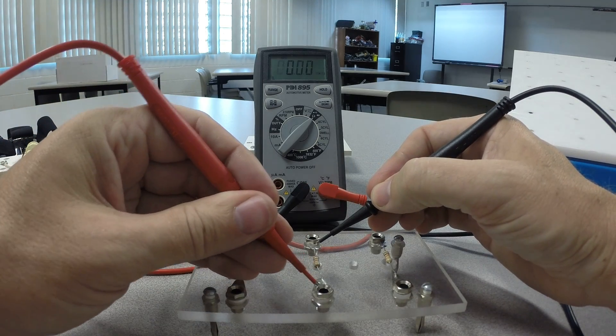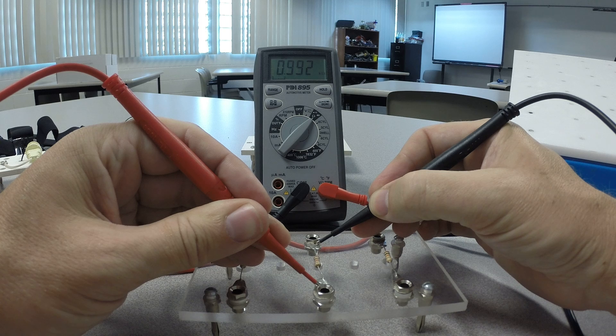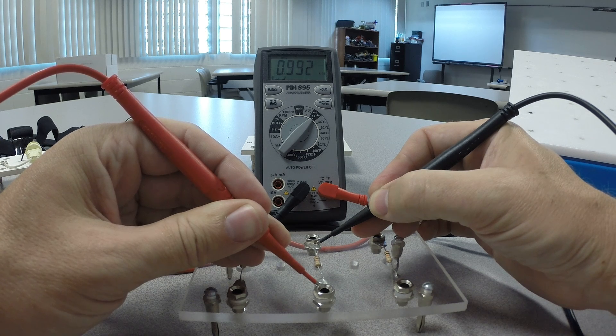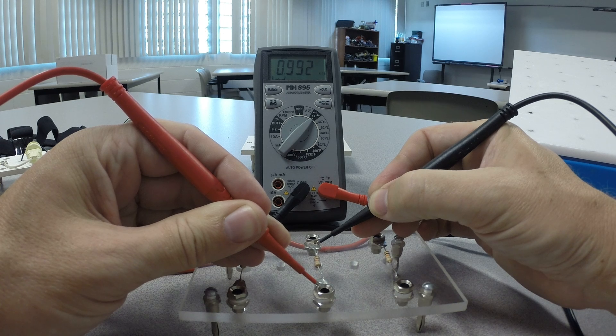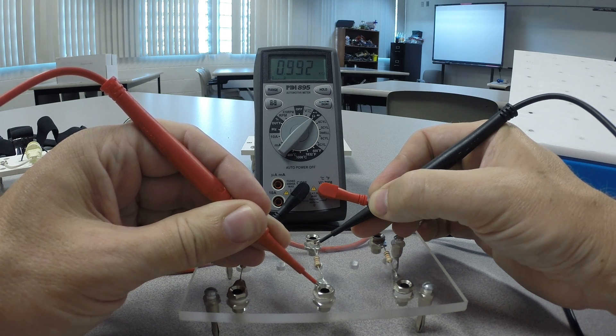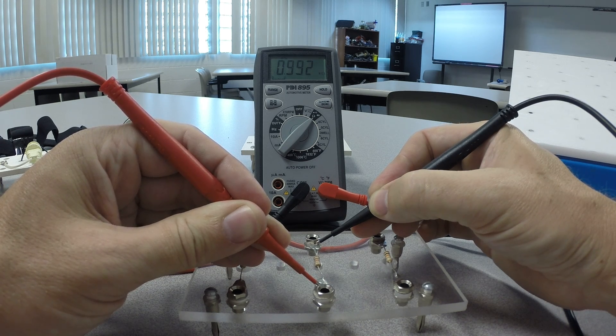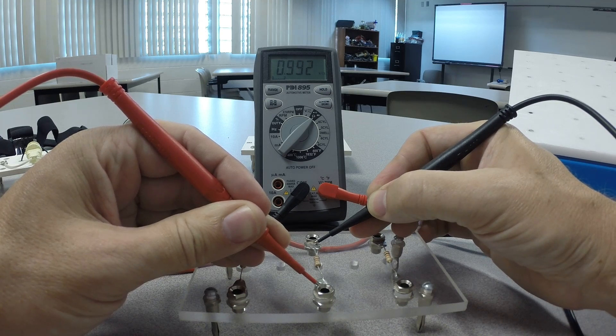We check the second one. Now it says 0.992, but that's not ohms. That's 0.992 kiloohms. And remember there's 1,000 ohms in one kiloohm. So that's, we're just shy of 1,000 ohms.